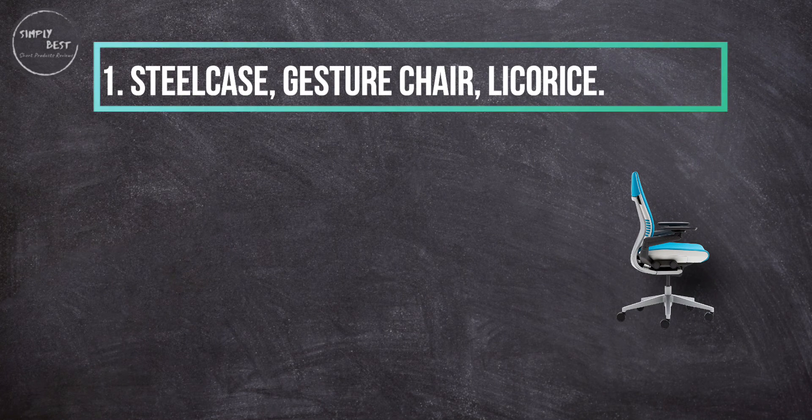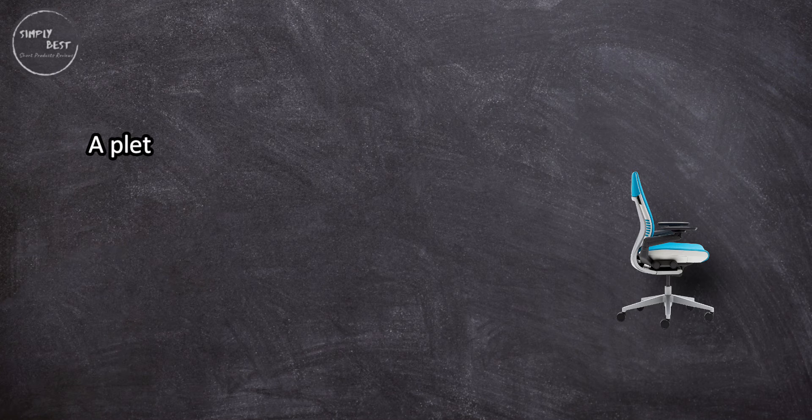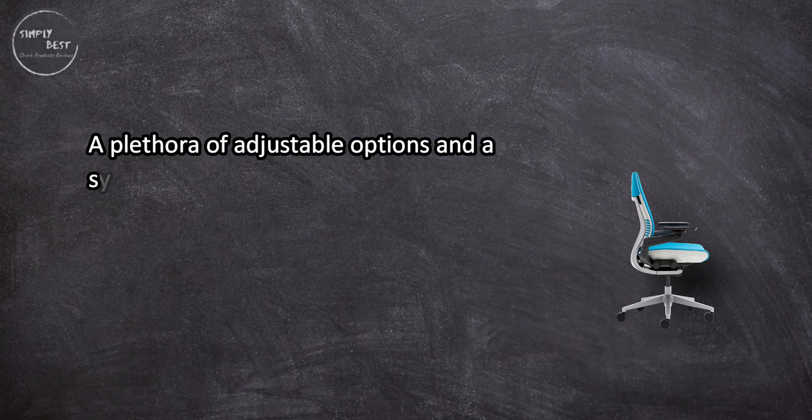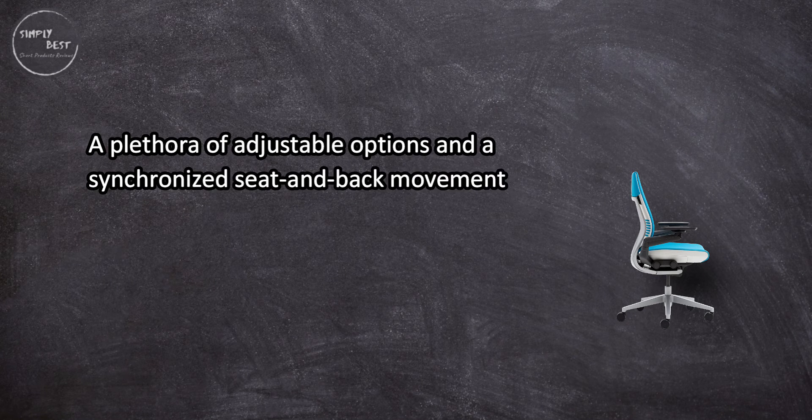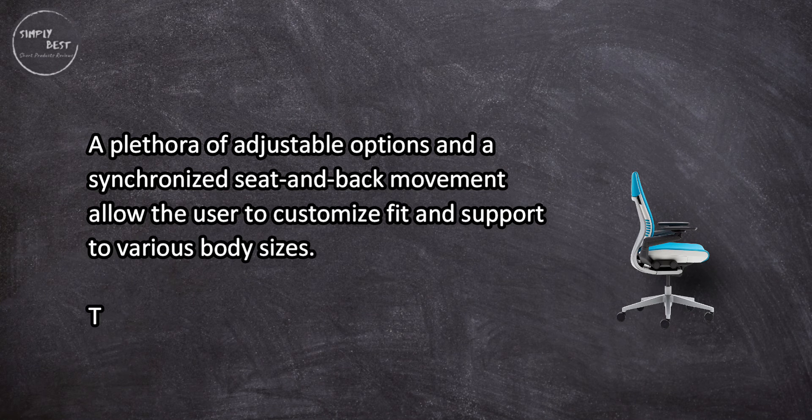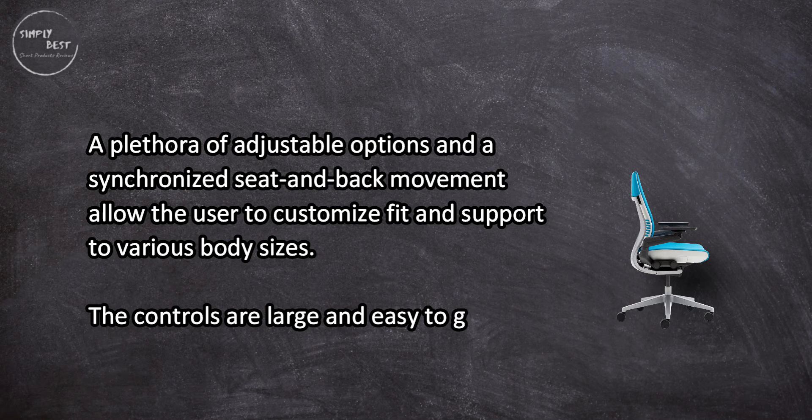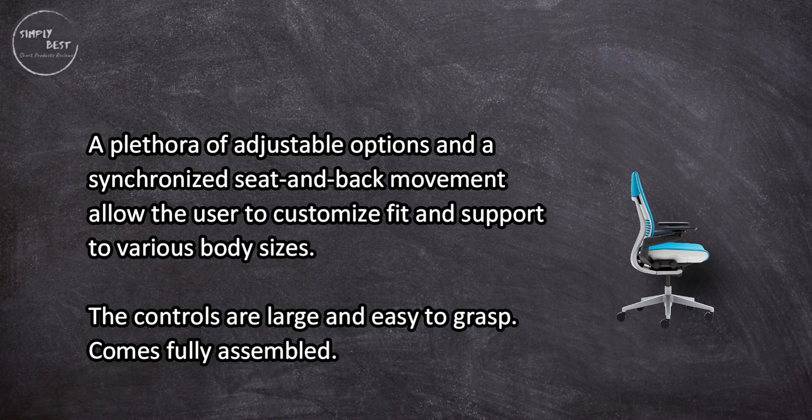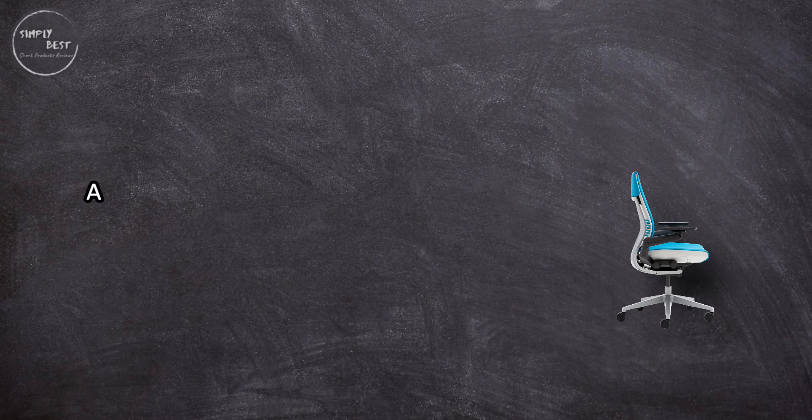At number one, Steelcase Gesture Chair Licorice. A plethora of adjustable options and a synchronized seat and back movement allow the user to customize fit and support to various body sizes. The controls are large and easy to grasp. Comes fully assembled.